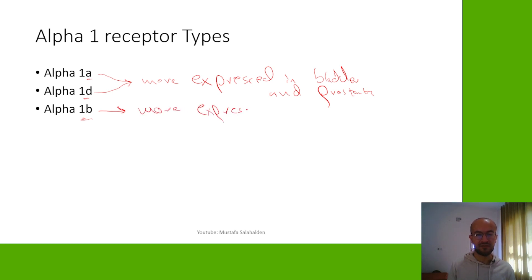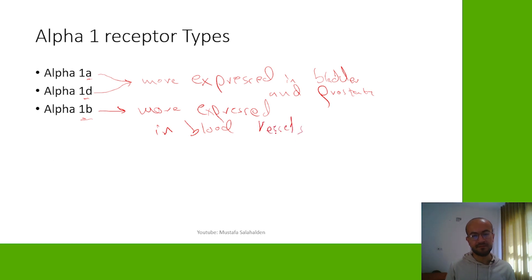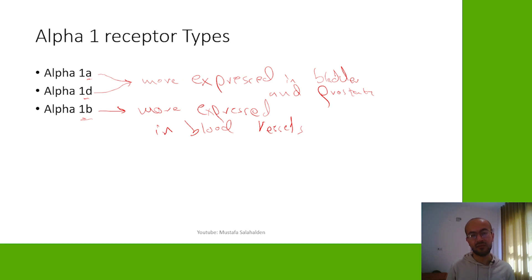Alpha-1b is more expressed in the blood vessels. This will help us understand some of the drugs I'm going to explain in this video.